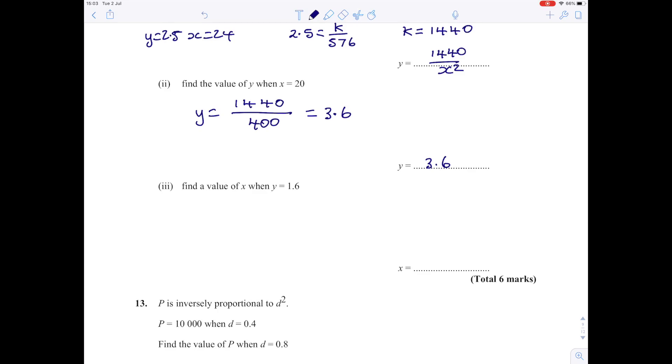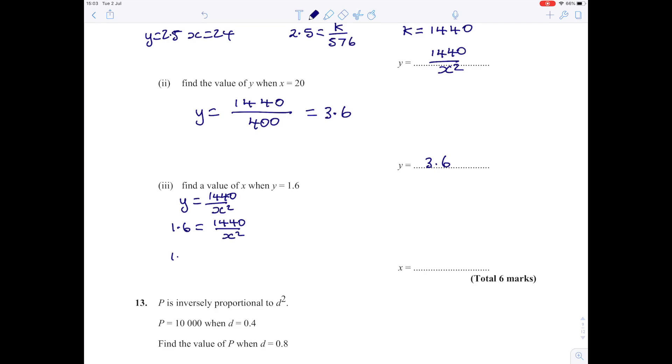Now for the value of x when y equals 1.6. We're using the connection that y is 1440 over x squared. So 1.6 is 1440 over x squared. Multiply by x squared: 1.6 x squared is 1440. Divide: x squared equals 1440 over 1.6, which is 900. To find x, we square root 900. You get two answers: positive 30 or negative 30. That's why the question says find a value of x rather than the value of x. There are two values, positive 30 and negative 30, and I'm going to choose positive 30.